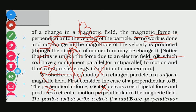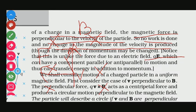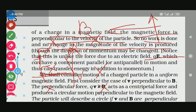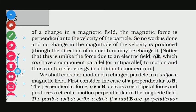So no work is done and no change in magnitude of the velocity is produced. Because the direction of force and the direction of velocity of the moving charge are perpendicular to each other, the angle between them is 90 degrees. Therefore work done = F·s·cos90° = 0, so no work is done on this particle by this force.